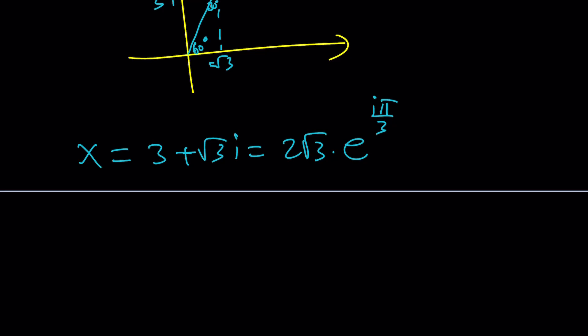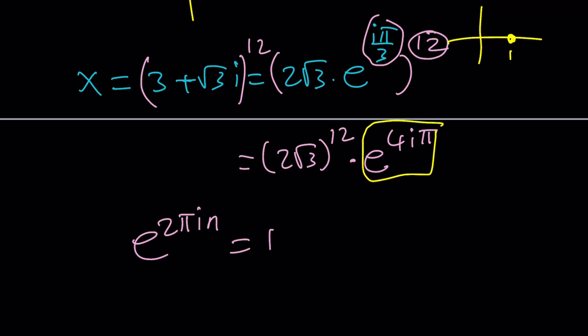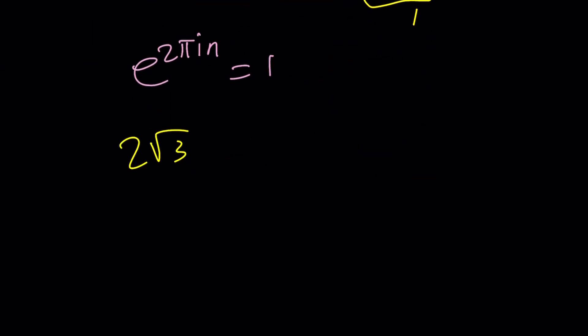Now, raising both sides to the 12th power would be super easy because all you have to do is apply the De Moivre's formula or just exponentiate it. This gives you 2 root 3 to the 12th power times e to the power, so what do you do to the exponents? These exponents are multiplied and 3 goes into 12 four times, so it's 4i pi. And guess what? e to the power 2 pi i n is going to give you 1 all the time because this is just unity. 2 pi or multiples of 2 pi is always going to produce 1. That's the number. So this will be 1, so the answer is 2 root 3 to the 12th power.